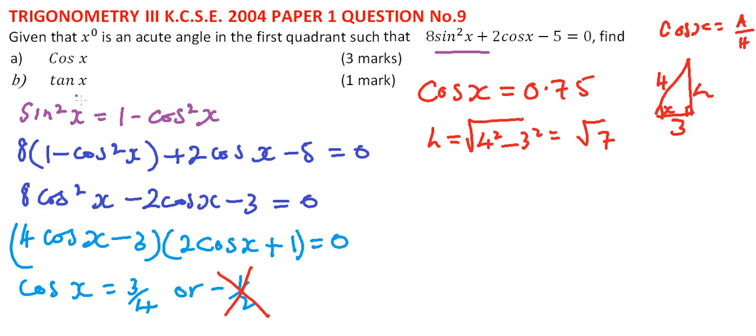Tangent of angle x equals the opposite side, which is √7, divided by the adjacent side, which equals 3. So tan x = √7/3.